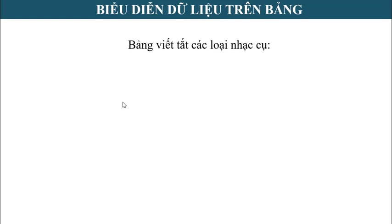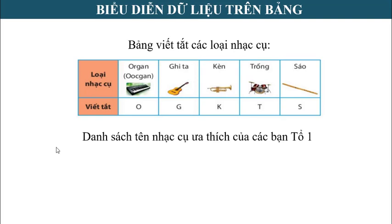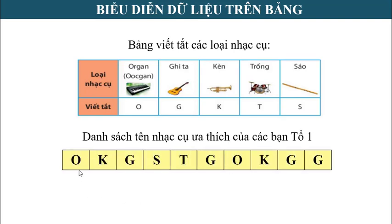Để cụ thể hơn, chúng ta cùng nghiên cứu ví dụ số 2. Cô có bảng viết tắt các loại nhạc cụ, đề cập tới 5 loại: đàn organ, đàn guitar, kèn, trống và sáo. Cô viết tắt: organ là O, guitar là G, kèn là K, trống là T, sáo là S. Cô điều tra xem các bạn tổ bốn ưa thích loại nhạc cụ nào. Bảng kết quả thể hiện thông tin dưới dạng danh sách các chữ cái viết tắt, bảng này được gọi là bảng dữ liệu ban đầu.